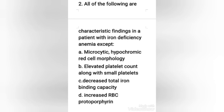Next question: all of the following are characteristic findings in a patient with iron deficiency anemia EXCEPT — microcytic hypochromic red cell morphology, elevated platelet count with small platelets, decreased total iron binding capacity, or increased RBC protoporphyrin? The right answer is option C, decreased total iron binding capacity. In iron deficiency anemia there is an increase in total iron binding capacity and in RBC protoporphyrin. Morphological characteristics include microcytic hypochromic red cells, and platelets are usually small and increased in number.